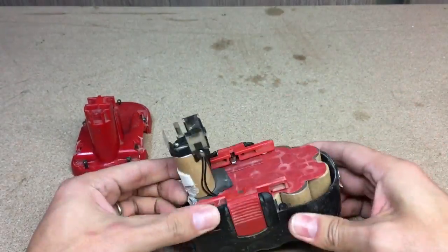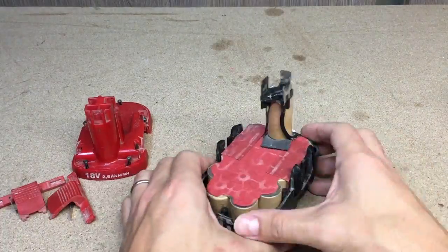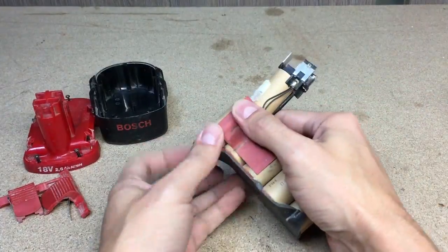One NiMH cell nominal voltage is 1.2 volts. Fully charged, they could have up to 1.45 volts. So my guess makes sense.